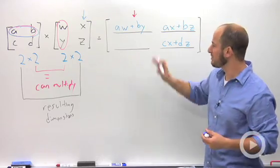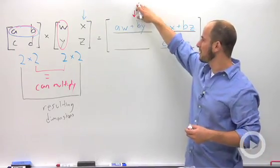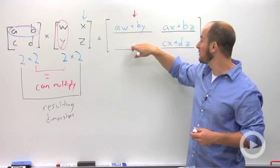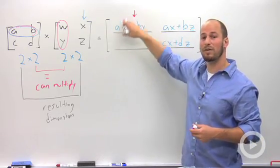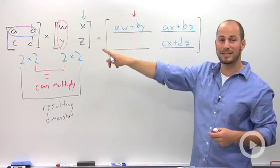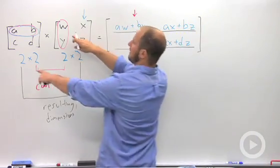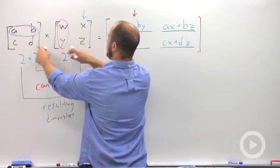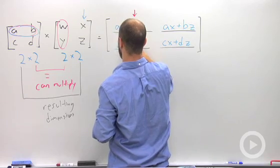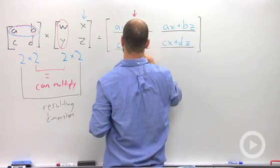We'll just finish this one up because we only have one more entry to go. First row, sorry, that's our first row. Our second row, first column. So we're dealing with the second row of our first matrix, first column of the second. This will be cw times dy. Sorry, cw plus dy.